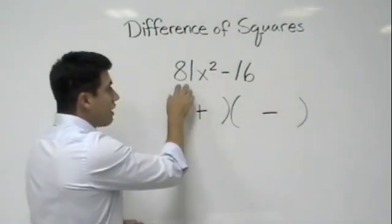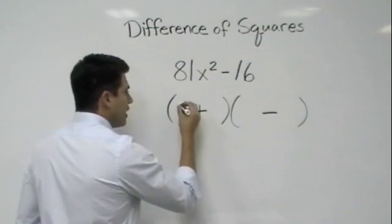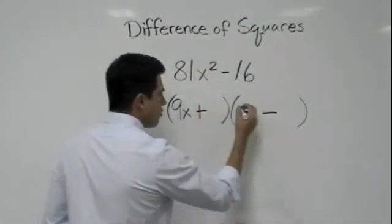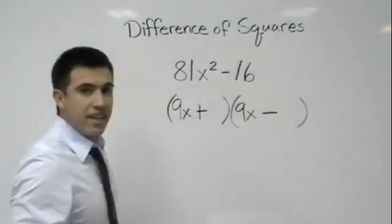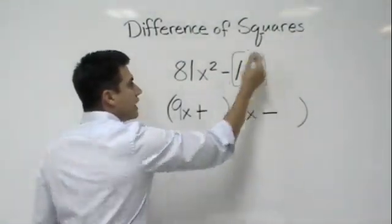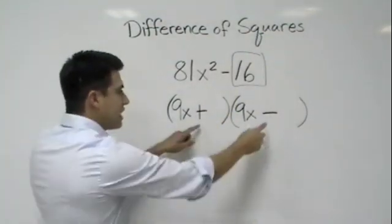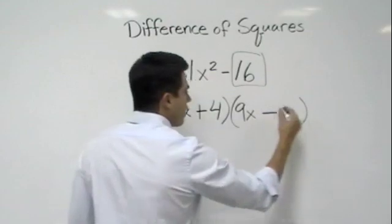The square root of 81x squared is 9x, and I'll put one here, and I'll put one there. So I'll put 9x and 9x, and then the square root of 16—and we just look at 16, we don't look at the minus sign because we've already taken care of that right here. And it would be 4 and 4.